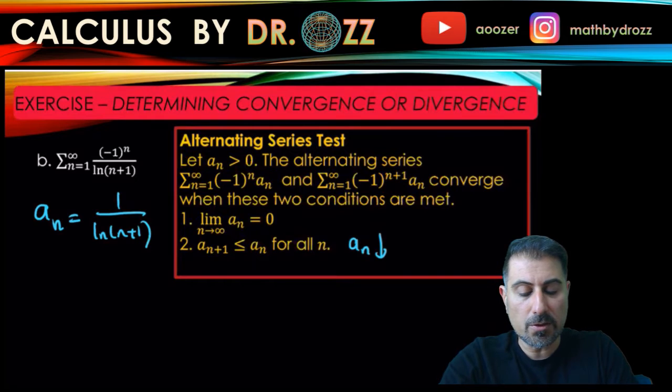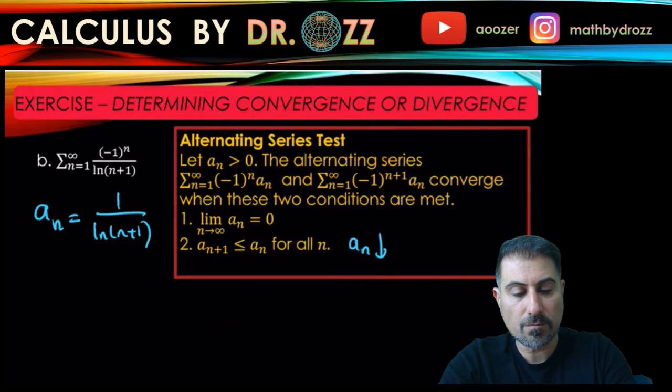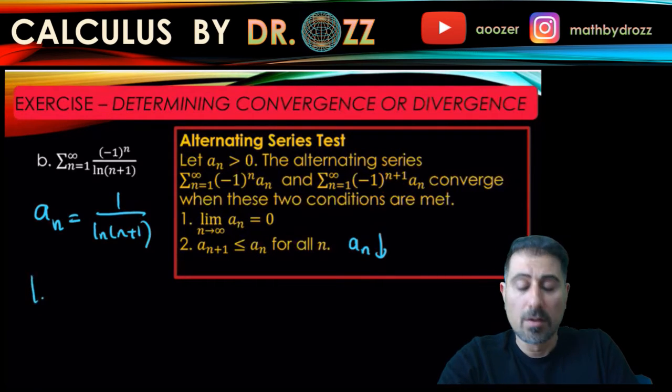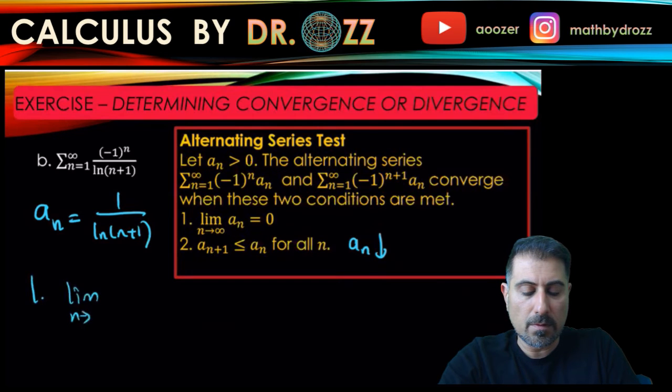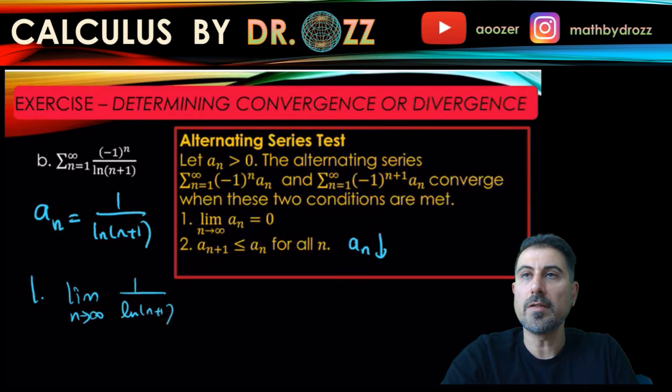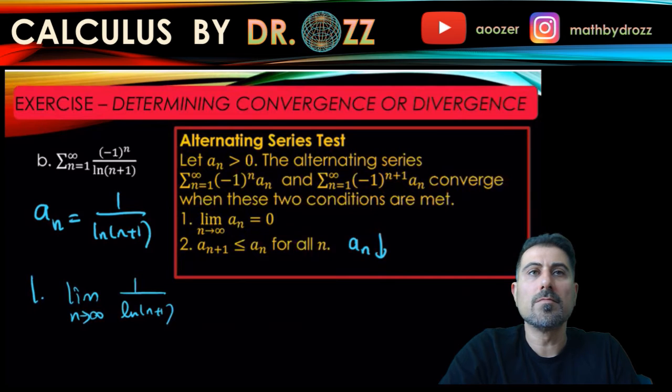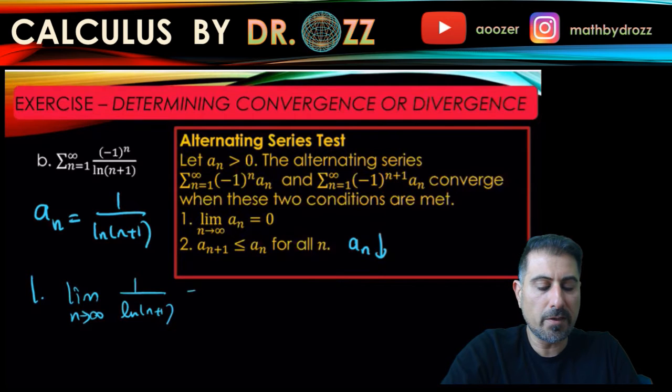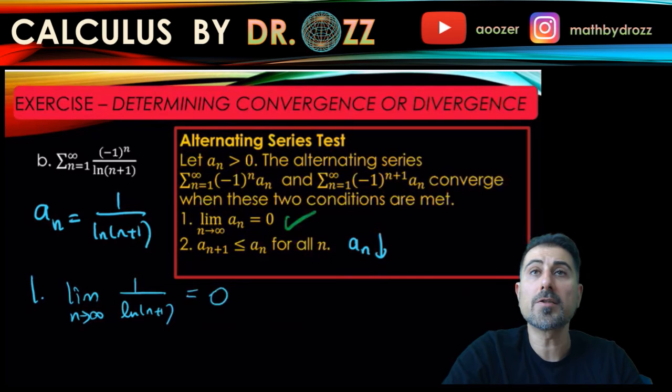So first condition. The limit of 1 over ln(n+1). Well, the top is constant. The bottom is ln(n) and ln(infinity) is just infinity because ln is an increasing function. It approaches infinity for larger n's. So 1 over infinity is going to tend to 0. So that means I'm going to put a checkmark here.